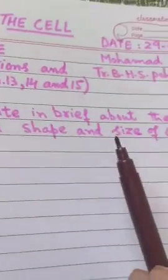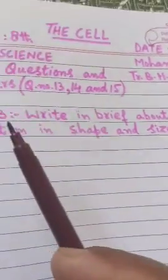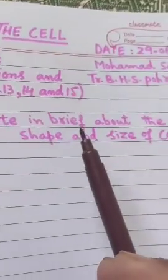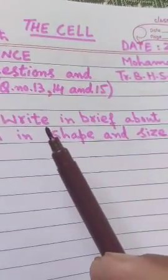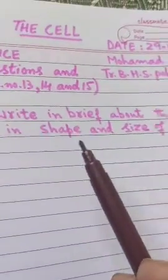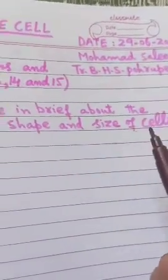Question number 13 is: write in brief about the variation in shape and size of cells. So we have to write about the variation in shape and size of cells. Variation means difference.